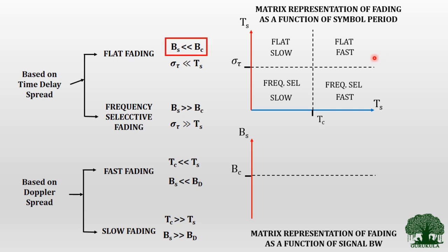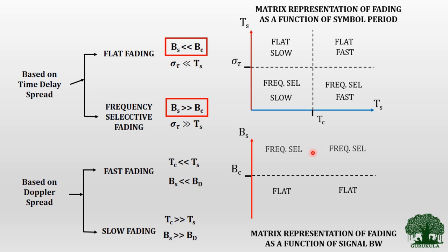The first comparison: whenever B_s is less than B_c, that region is classified as flat fading — that is the region on the graph where signal bandwidth holds a lesser value than channel bandwidth B_c. When B_s is greater than B_c, meaning the signal bandwidth is higher than the coherence bandwidth, we call that frequency selective fading.